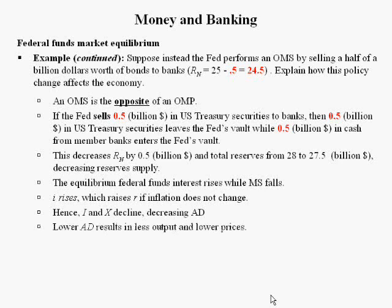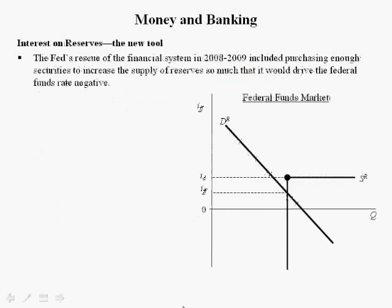In the model below, the Federal Funds rate is positive and the discount rate is 100 basis points, or one percentage point, higher than the Federal Funds rate. This is the situation before the financial crisis of 2008-2009. In this graphical example, we're going to demonstrate how the new tool works — that new tool is called interest on reserves.